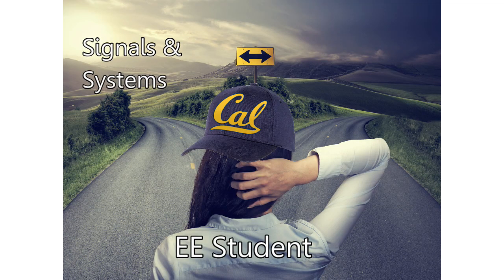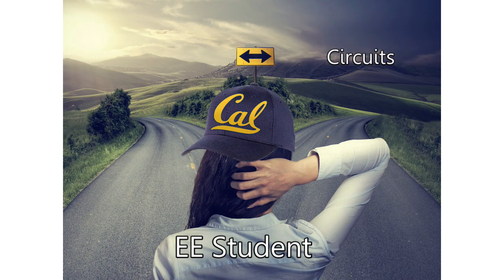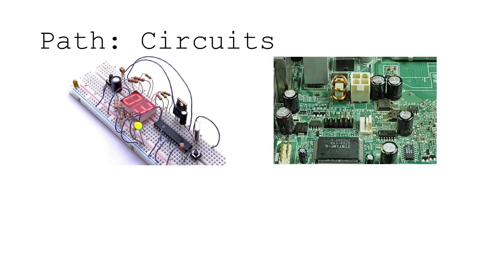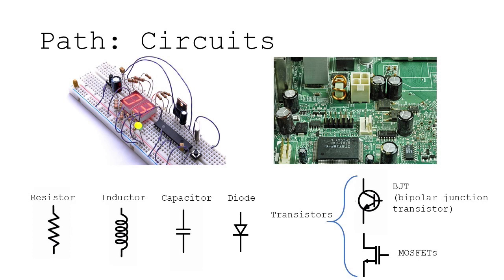Now let's talk about the other path in the fork: the circuits path. Usually you'll start off with a basic circuits course. You'll learn about different circuit components like resistors, inductors, capacitors, and diodes. You also learn about Kirchhoff's laws that allow you to solve for voltages and currents in basic circuits. And don't forget about transistors like BJTs — bipolar junction transistors — and MOSFET devices. All these components fit into basic circuit configurations that amplify signals, regulate voltages, or perform other functions. After your beginner circuits courses, you start to specialize.